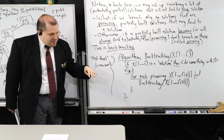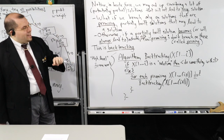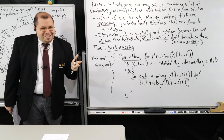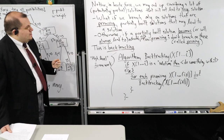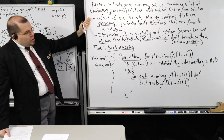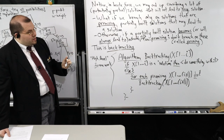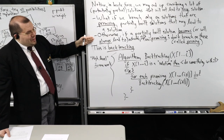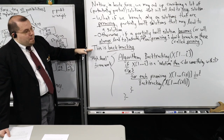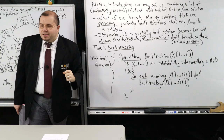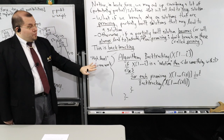This is what we call pruning — preventing exhausting possibilities you never need to consider. Once we have this declaration of a promising versus non-promising partially-built solution, and remember the quantifier: promising means it may lead to one, non-promising means it never will — that combination with depth-first exploration is what we call backtracking.